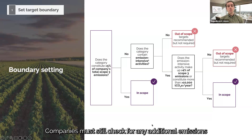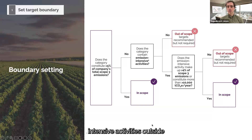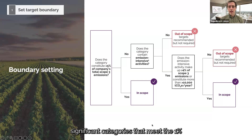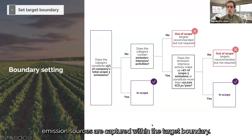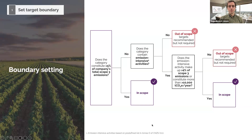Companies must still check for any additional emissions intensive activities outside significant categories that meet the 1% and 10,000 tons of CO2 per year thresholds. This ensures that all relevant emission sources are captured within the target boundary.